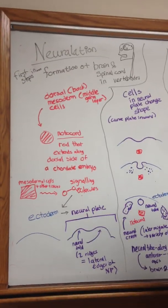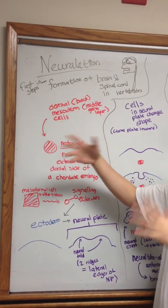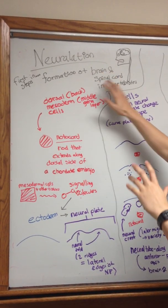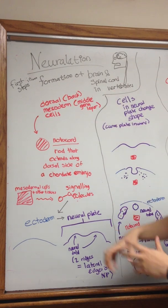Let's talk about neurulation. Neurulation is defined as the first steps in the formation of the brain and spinal cord in vertebrates, organisms with backbones.